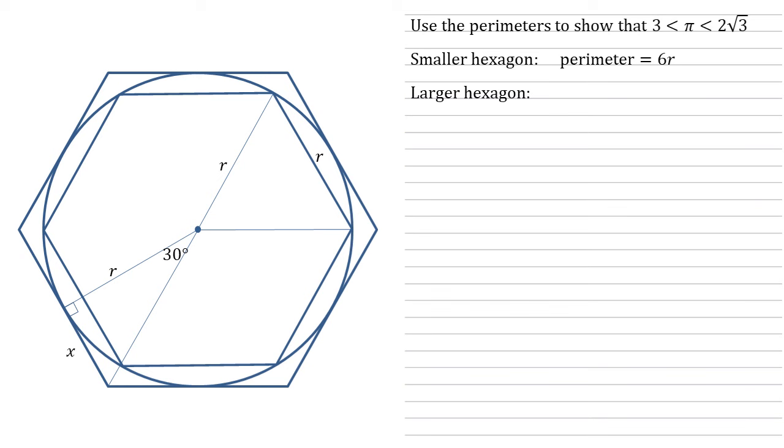We're going to use this to then find X, the opposite side of the triangle. To do that, we can use some trigonometry. We know that tan is equal to the opposite over the adjacent. So tan 30 is equal to X over R, which means that X must be equal to R tan 30. Tan 30 is 1 over root 3, so X is equal to R over root 3.